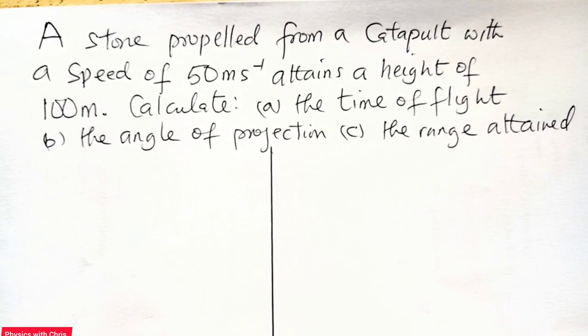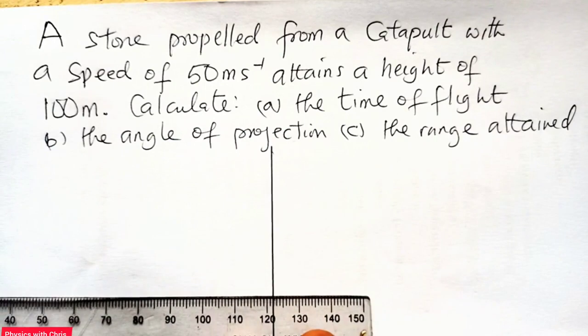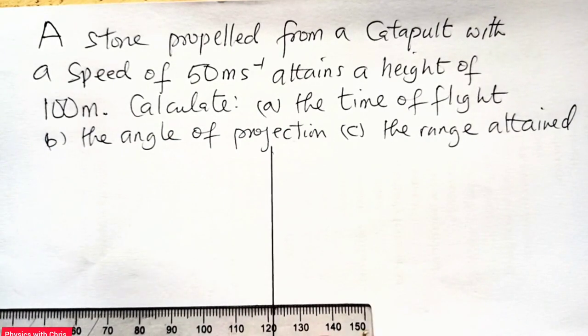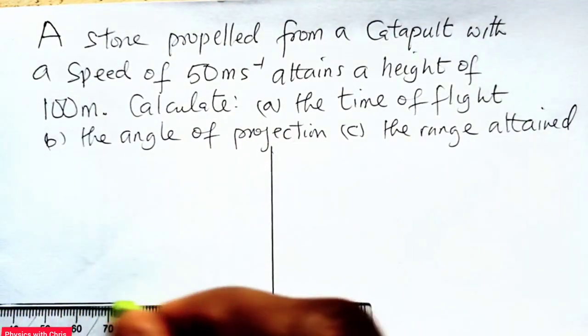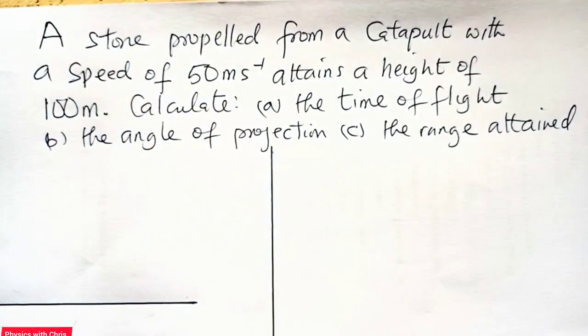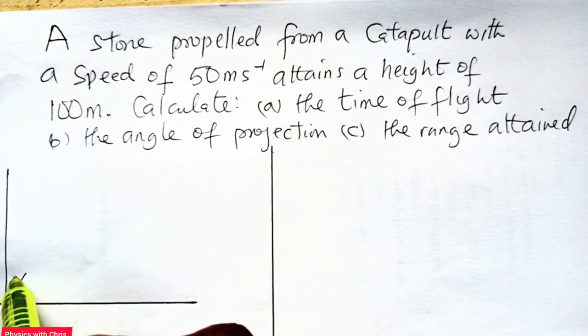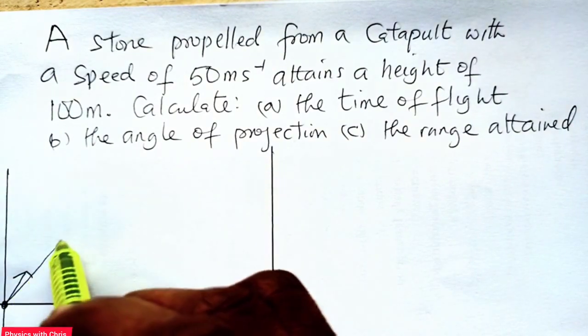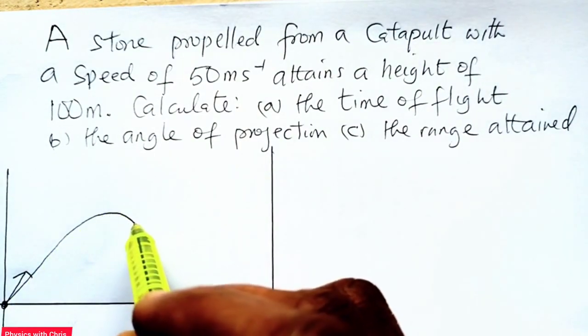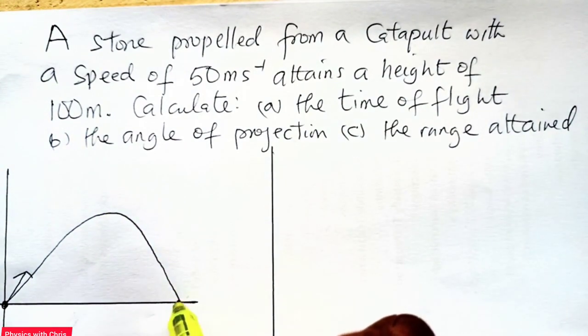This is a question taken from projectile motion. A stone is propelled from a catapult with a speed of 50 meters per second and it attains a height of 100 meters. As a way of illustration, let me use this diagram to show and illustrate the question. Now you see this stone projected from this point and of course we know it's going to follow this path and strike the ground somewhere here.